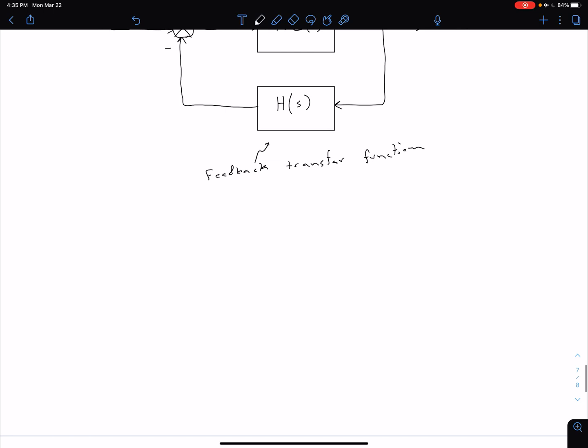So as we've seen before, what we can do is use our feedback form. When we're talking about reduction of systems, we can reduce this to a single block. So we can say that the single block is going to be K times G of S in the numerator divided by 1 plus K G of S times H of S in the denominator. Again, we just have our R of S coming in from the left and our C of S coming out from the right.